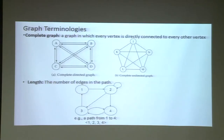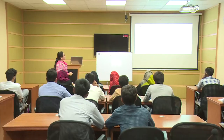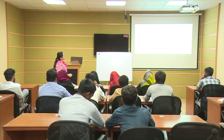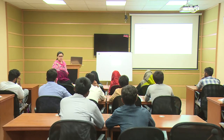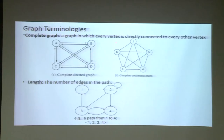Another important terminology is the complete graph. In a complete graph, each and every vertex is connected with every other vertex. For example, A is connected to B, D, and C; B is connected to A, C, and D. This is a directed complete graph with bidirections. There is also an undirected complete graph.